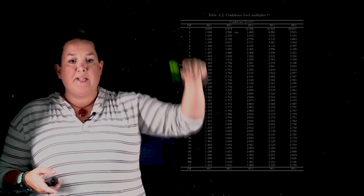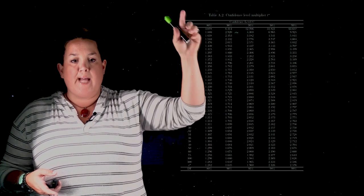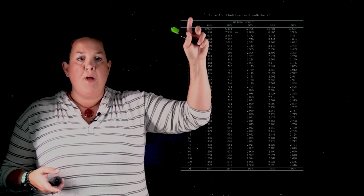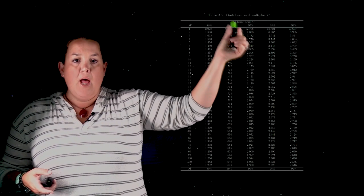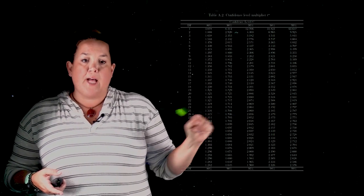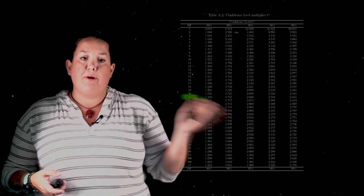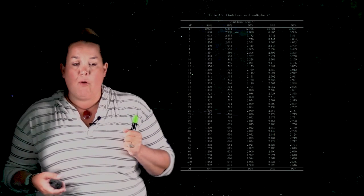So when you use these tables, on the left-hand side is going to be your degrees of freedom. And at the top of the table, you will have the confidence level. And then you want the intersection between those values to be able to figure out what your confidence level multiplier is.